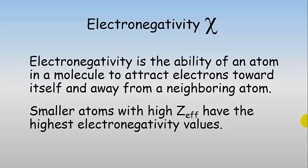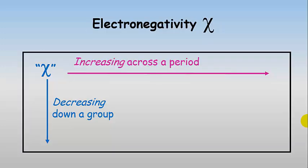Fluorine has the highest electronegativity. Fluorine is very, very greedy — it does not want to share electrons and wants to draw them away from other atoms in the molecule. In general, electronegativity increases across a period with increasing effective nuclear charge, and it decreases down a group as the orbitals get bigger.